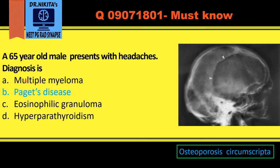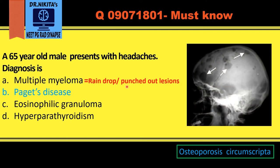Let us have a look at the rest of the options. In multiple myeloma, we have raindrop or punched-out lesions. Raindrop is like when a raindrop falls on a surface and splashes outward — that's a raindrop lesion. Well-defined punched-out lesions in the skull indicate multiple myeloma.